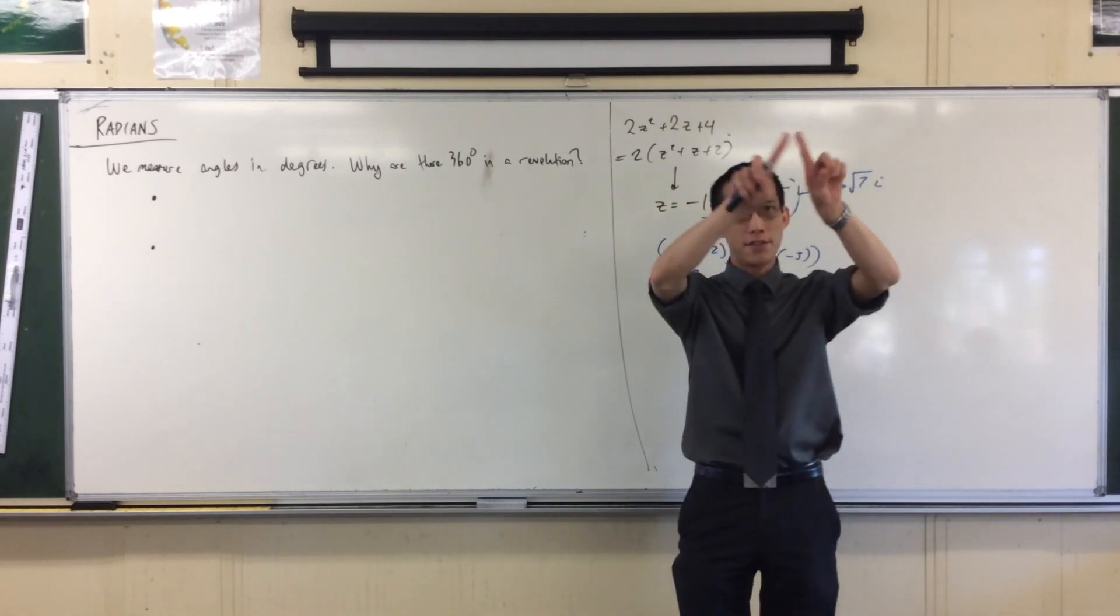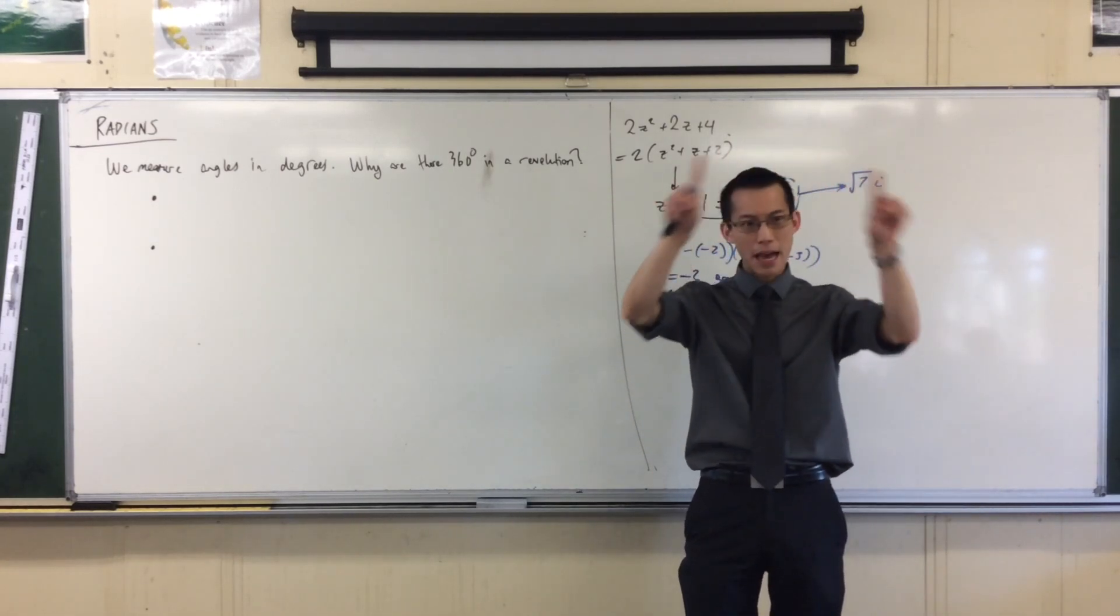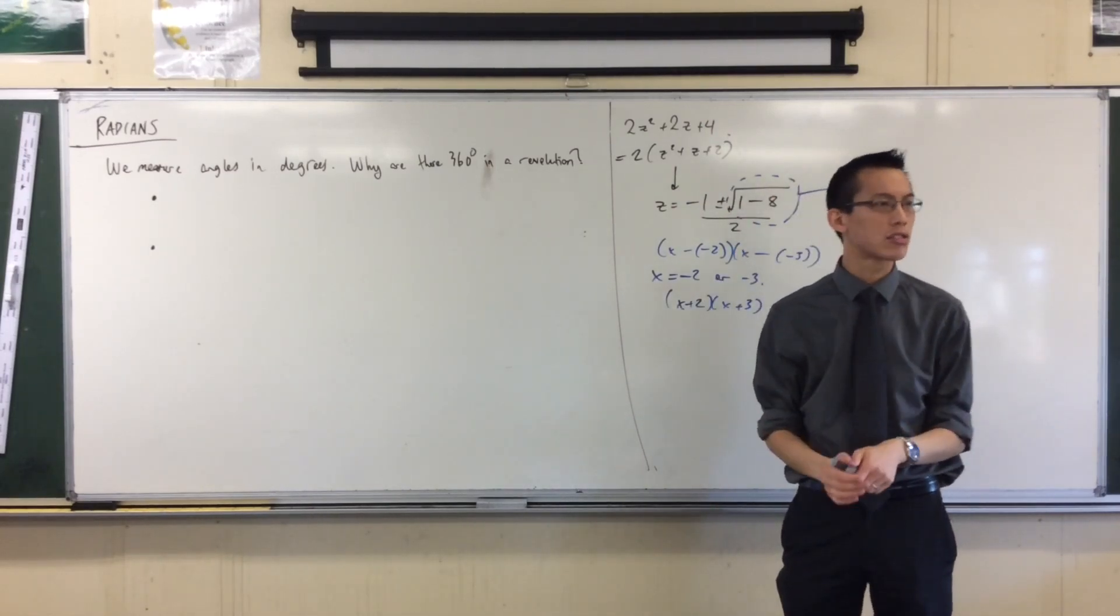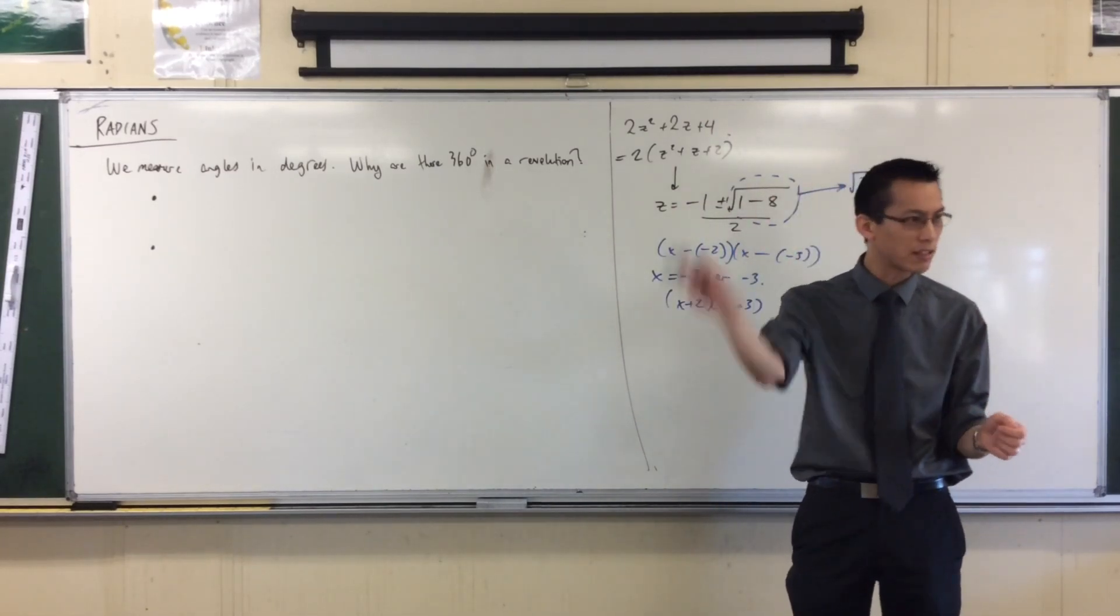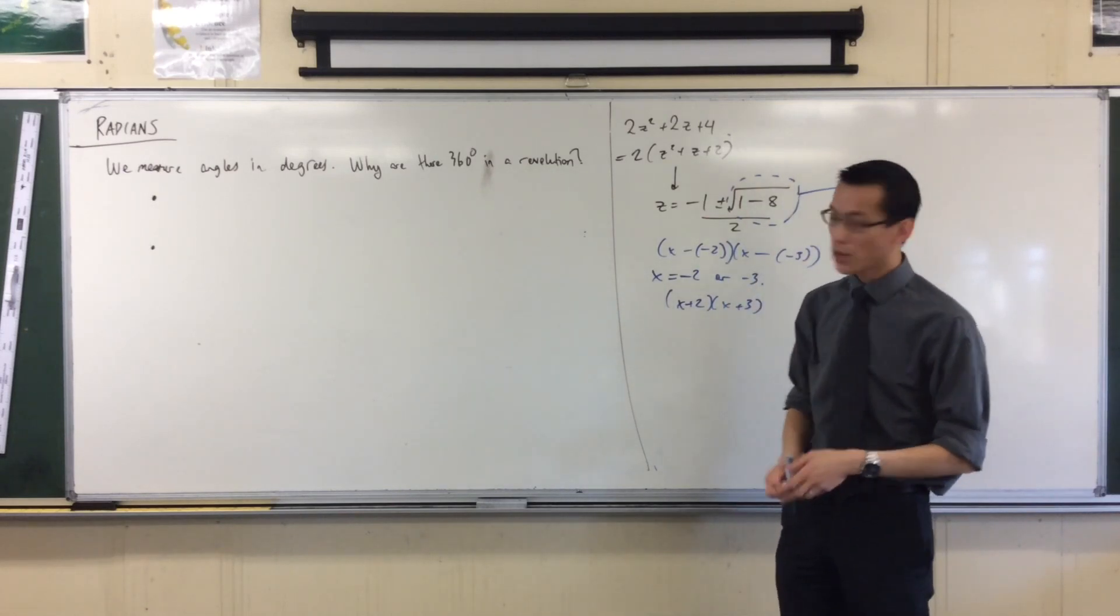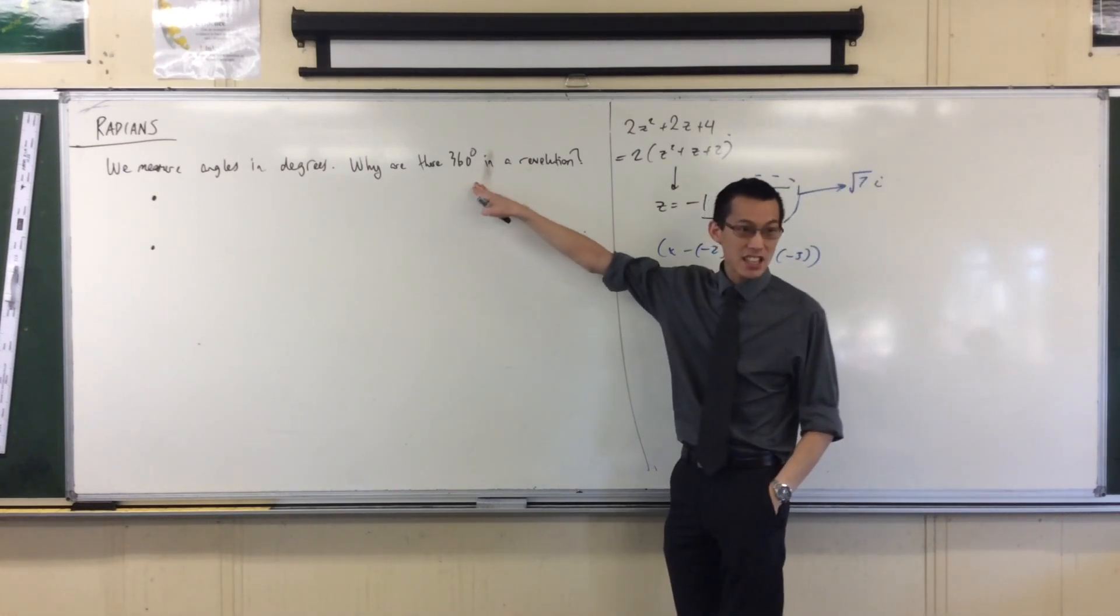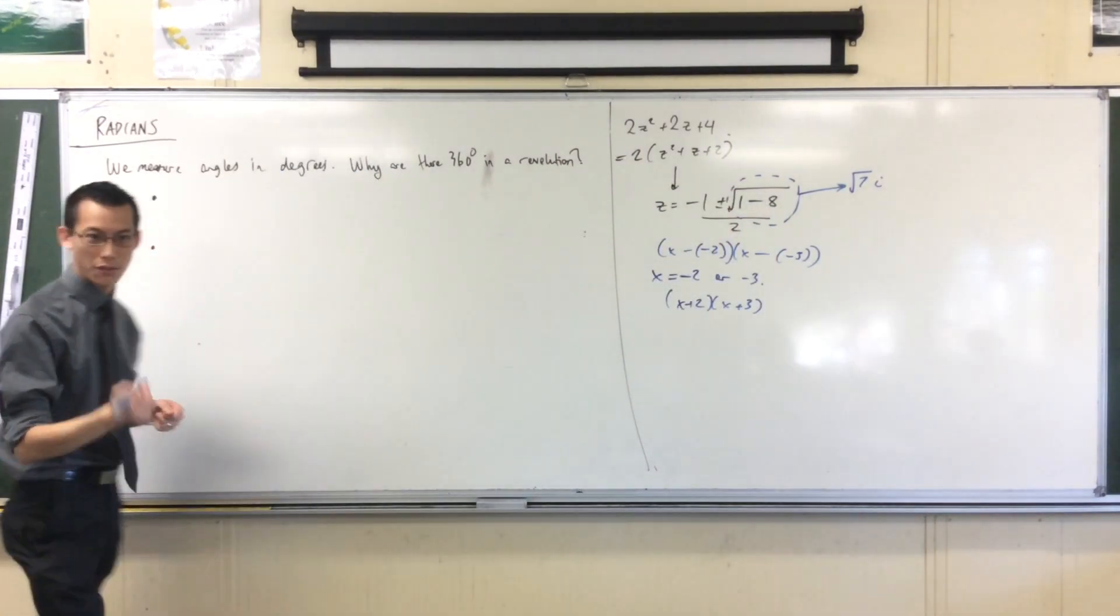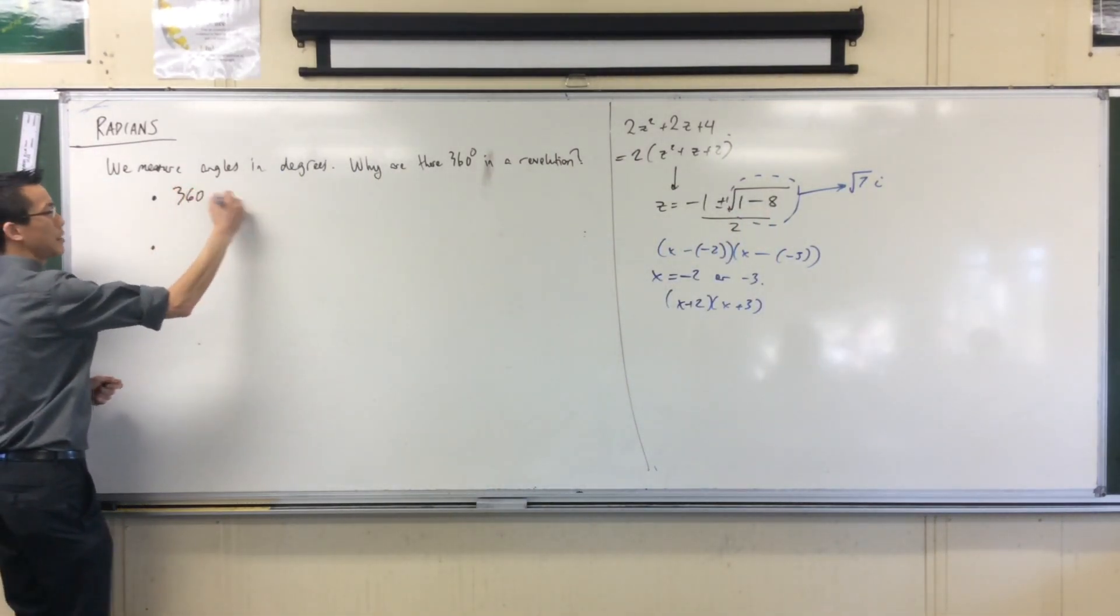When you have something that's round and people have been using round things to tell the time for a long time because time itself is cyclical, it goes round and round. So circles, 60s, 360s they make sense to put together because they're easy to divide.